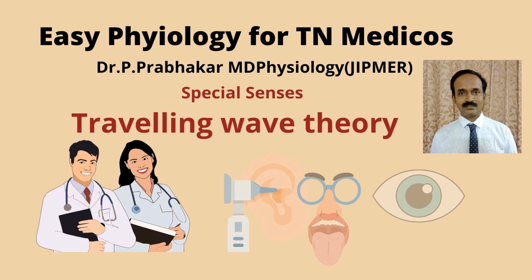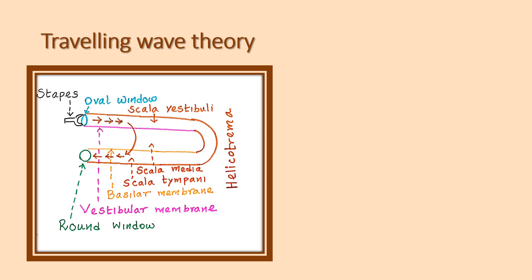Good morning. In this video we are going to discuss about the traveling wave theory. The traveling wave theory was proposed by Georg von Békésy in 1928, and he got the Nobel Prize for the traveling wave theory in 1961.